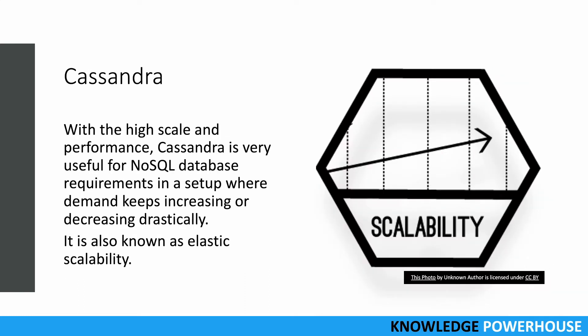With high scale and performance, Cassandra is very useful for NoSQL database requirements. In NoSQL, we have a large amount of data, especially in big data use cases, where demand can keep increasing or decreasing drastically. In such cases, you may need to suddenly add 500 or even 1000 more servers. Cassandra is able to add all these nodes very fast. This is also known as elastic scalability, which means you can scale up or scale down very easily with Cassandra.